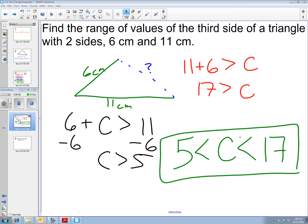We've now written it as a range. C, our third side, has to be bigger than 5 but smaller than 17.